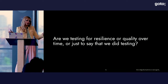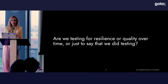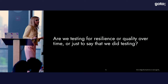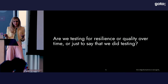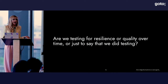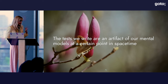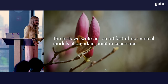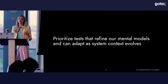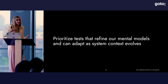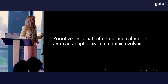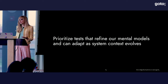We can start with testing and how to be thoughtful about it. A spicy question: as a discipline, are we testing for quality and resilience over time, or are we testing just to say that we did — just checking a box? The latter happens a lot more often than we'd like to admit. The tests we write are an artifact of our mental models at a single point in time, but because reality evolves — including the systems and workloads within it — tests obsolesce. Insights we learn from chaos experiments, real incidents, and even the system's healthy operation have to be fed back into our testing suites to ensure they're reflective of production reality. We need to prioritize tests that help us refine our mental models, especially as context evolves.